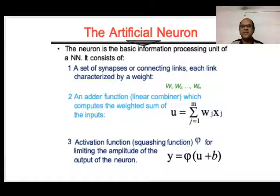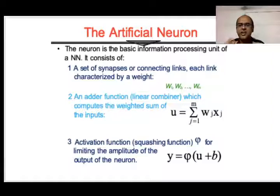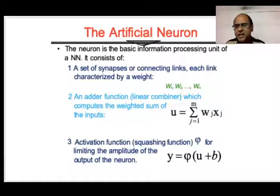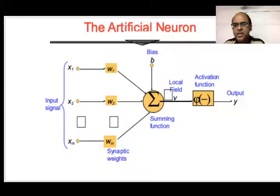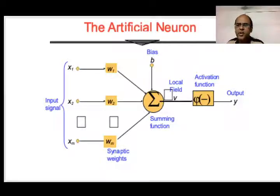An artificial neuron is the basic processing unit of a neural network. It has a set of synapses or collecting links, each with a weight determined by w1, w2, up to wn. Then there is an adder function — a linear combiner that computes a weighted sum. There is also an activation function, otherwise called the squashing function, that limits the amplitude of the output y. Inputs x1, x2 up to xn are multiplied by synaptic weights w1, w2 up to wn.